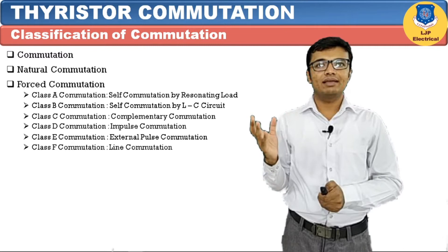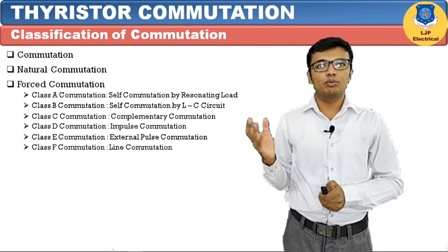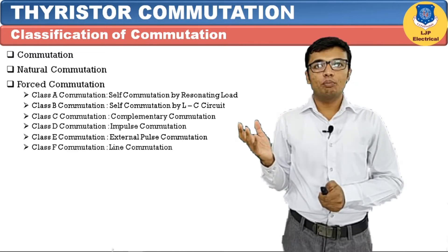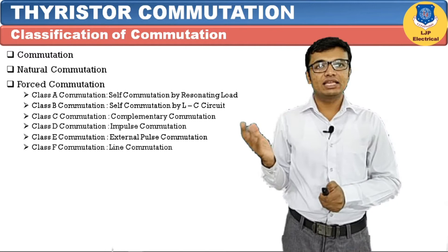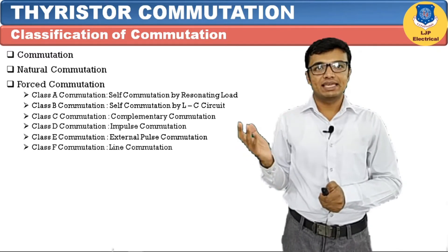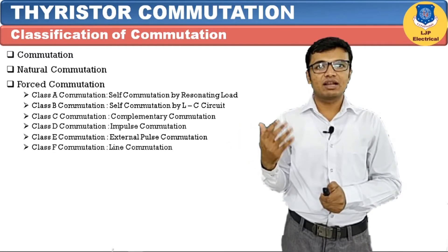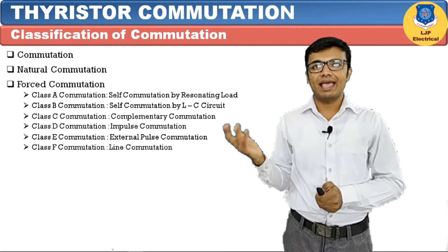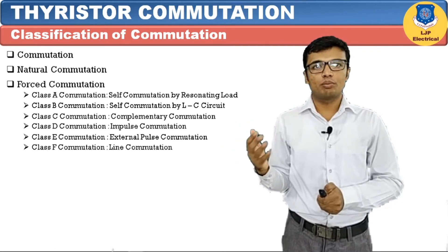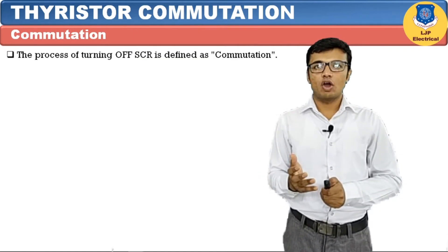Class A commutation is self-commutated by a resonating load. Class B commutation is self-commutated by an LC circuit. Class C commutation is complementary commutation. Class D commutation is impulse commutation. Class E commutation is external pulse commutation, where we have to provide an external pulse to turn off the SCR. Class F commutation is natural commutation, also called line commutation.